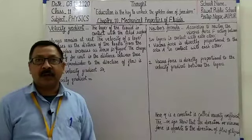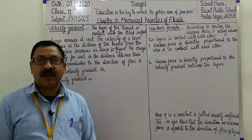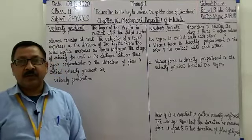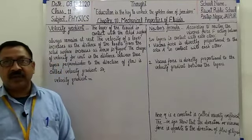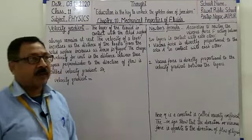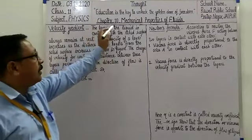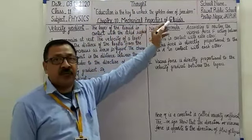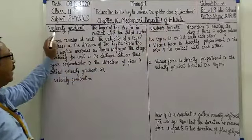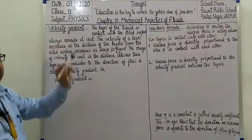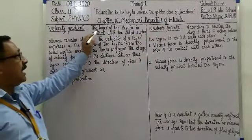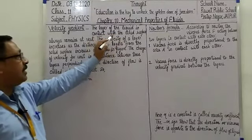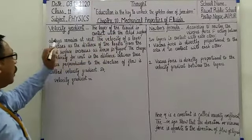Hello, good morning everyone. I hope you all are good and energetic. Today we start the next topics of Chapter 10: Mechanical Properties of Fluids — velocity gradient. The layer of the liquid in contact with the solid surface always remains at rest.